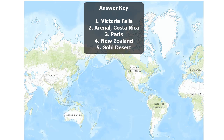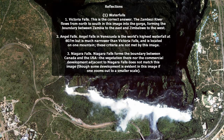Alright, so let's take a look at the answer key now. This is Victoria Falls. The Zambezi River flows from north to south in this image into the gorge, forming the boundary between Zambia to the east and Zimbabwe to the west. Angel Falls in Venezuela is a good guess, but it is the world's highest waterfall at 807 meters, but it's much narrower than Victoria Falls and is located on one mountain. These criteria are not met by this image.